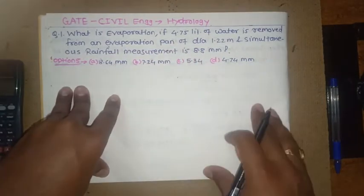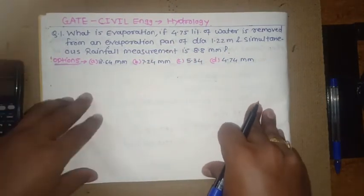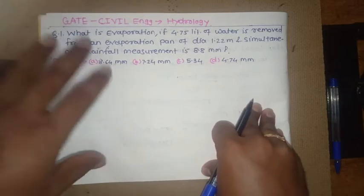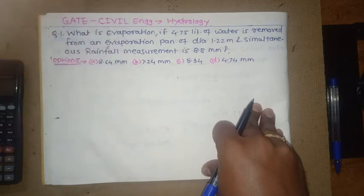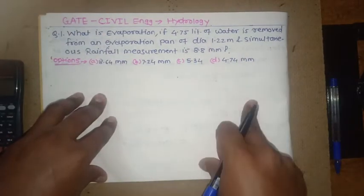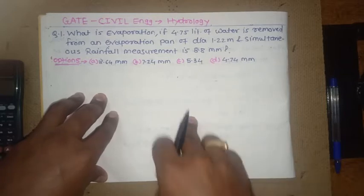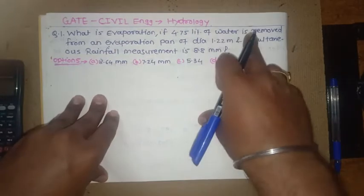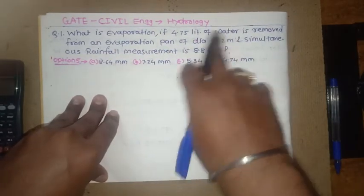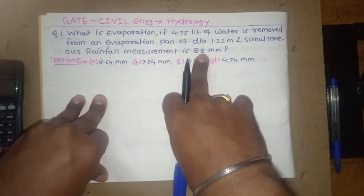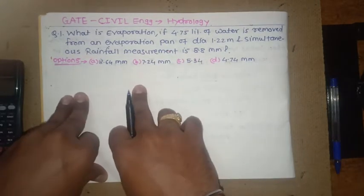That is rainfall accumulated at the same time water is withdrawn from that pan. We have to take into account and by this budgeting method we need to calculate the evaporation, rainfall, and other parameters. Here dimensions of pan, evaporation pan is given, rainfall is given, and we have to find out the evaporation.